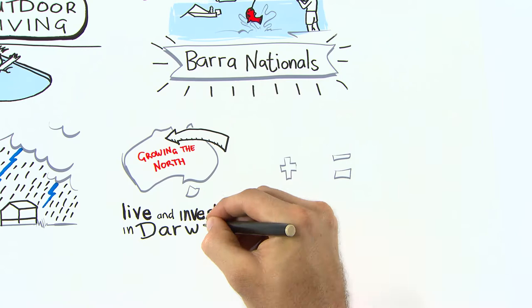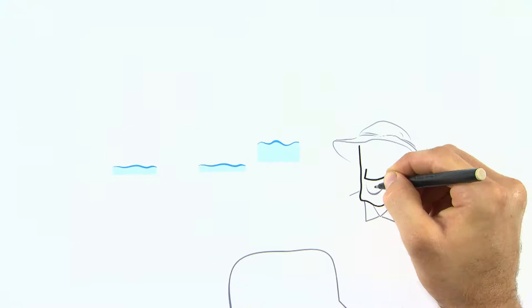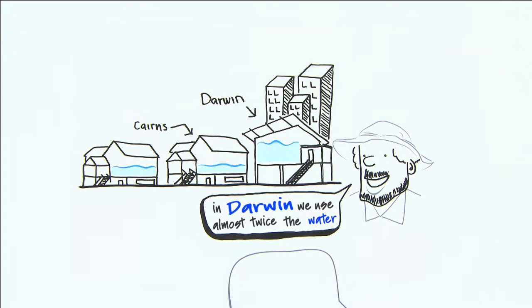People are choosing to live, work and invest here, and population growth means increases in water use. In Darwin, we use almost twice the water than places with similar climates like Cairns.